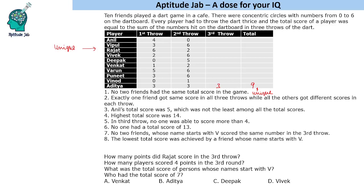We are given that Anil's total was 5, so his 3rd throw will be 1 to make it 5. The highest total score was 14. In the 3rd throw, no one was able to score more than 4 — so 4 is the maximum value in this throw. Also, no one had a total score of 13.